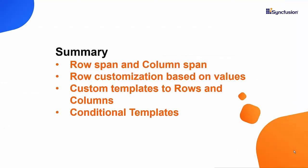Let me summarize some of the major points we discussed in this video. First we saw how to add row span and column span to the DataGrid rows and columns. Next we saw row customization based on specific values in the row. We saw how to apply custom templates to rows and columns. Finally we saw how to render conditional templates based on specific conditions. Thanks for watching — if you found this video useful, give it a like and subscribe to our channel. Thank you, see you next time.